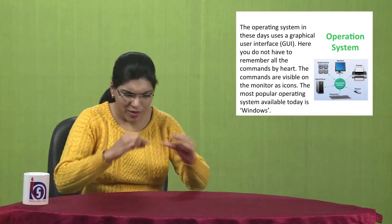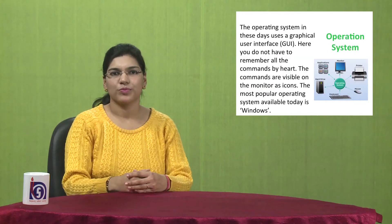The most popular operating system available today is Windows. The Windows operating system has evolved over time in the form of different versions visible in the slide. The first versions were Windows 95, Windows 98, and Windows 2000. Currently Windows XP, Windows Vista, and Windows 7 are in use. In this lesson we will explain the main features of Windows XP.